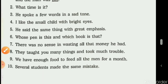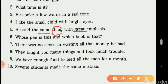The fifth sentence: 'He said the same thing with great emphasis.' The adjectives are 'same' and 'great.' 'Same' describes the noun 'thing' — it describes the quality of the thing, so it is adjective of quality. 'Great' describes the noun 'emphasis' — how was the emphasis? Great — also adjective of quality. Both 'same' and 'great' are adjectives of quality.